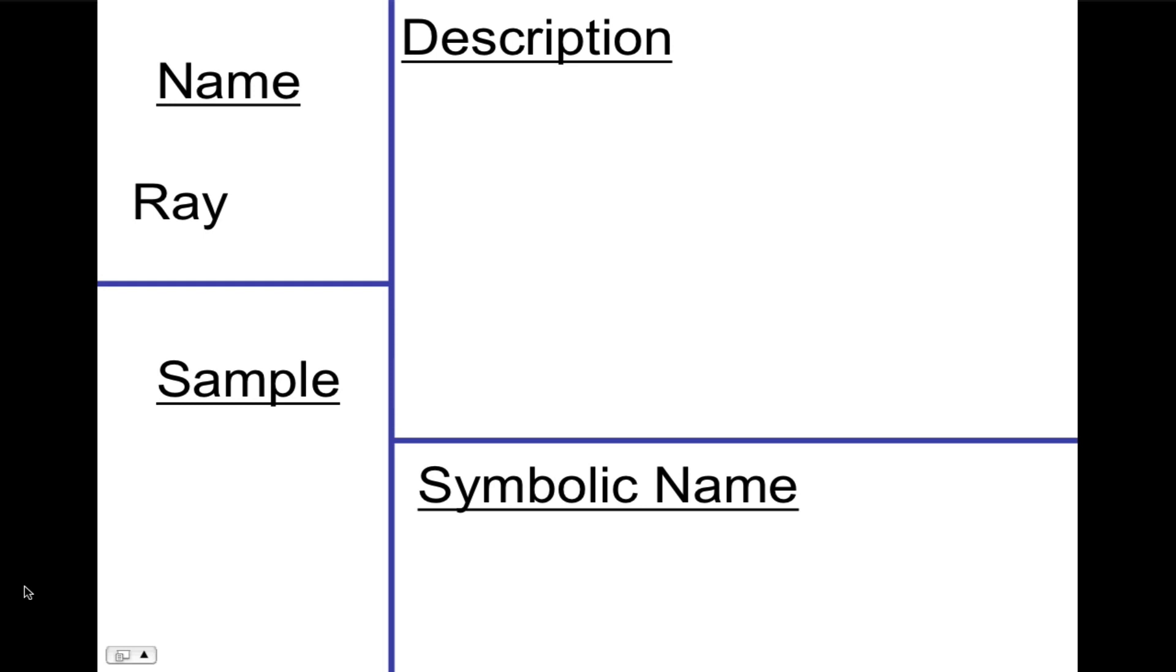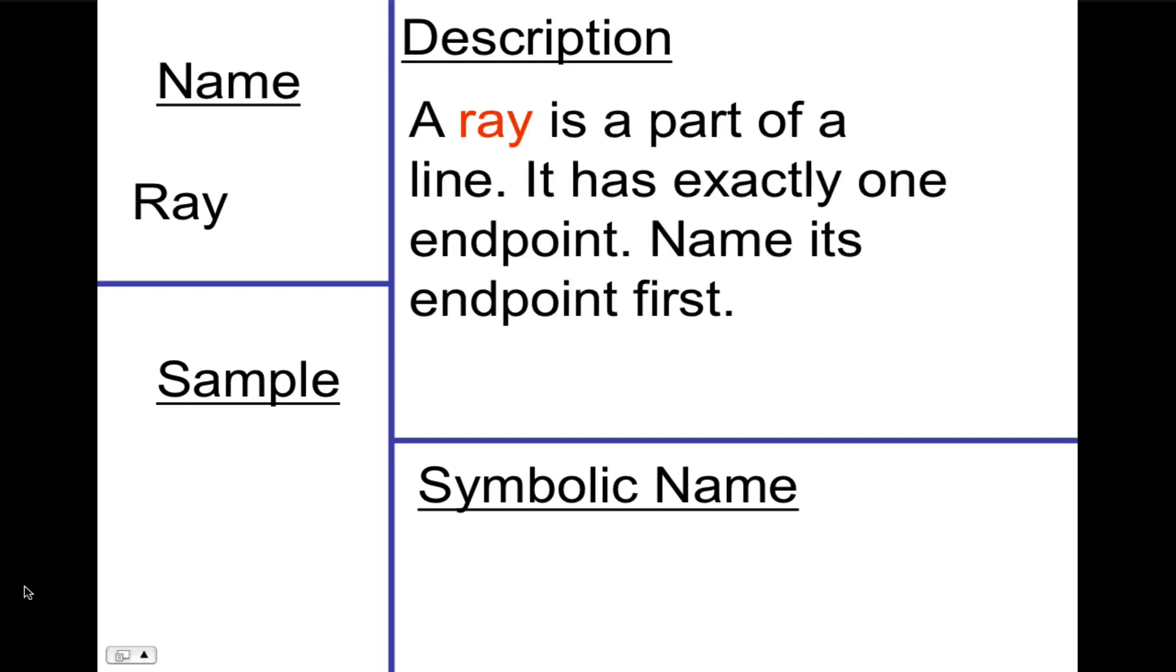Next comes Ray, which is another part of a line. A Ray has exactly one endpoint. When you name a Ray, you have to name its endpoint first. So here's our sample Ray. This Ray, when we name it, the name has to begin with K. This Ray would be called KJ. Notice that we put the Ray symbol above it, which is an arrow pointing in one direction only. And it starts at its endpoint and then goes through the point that's not the endpoint.